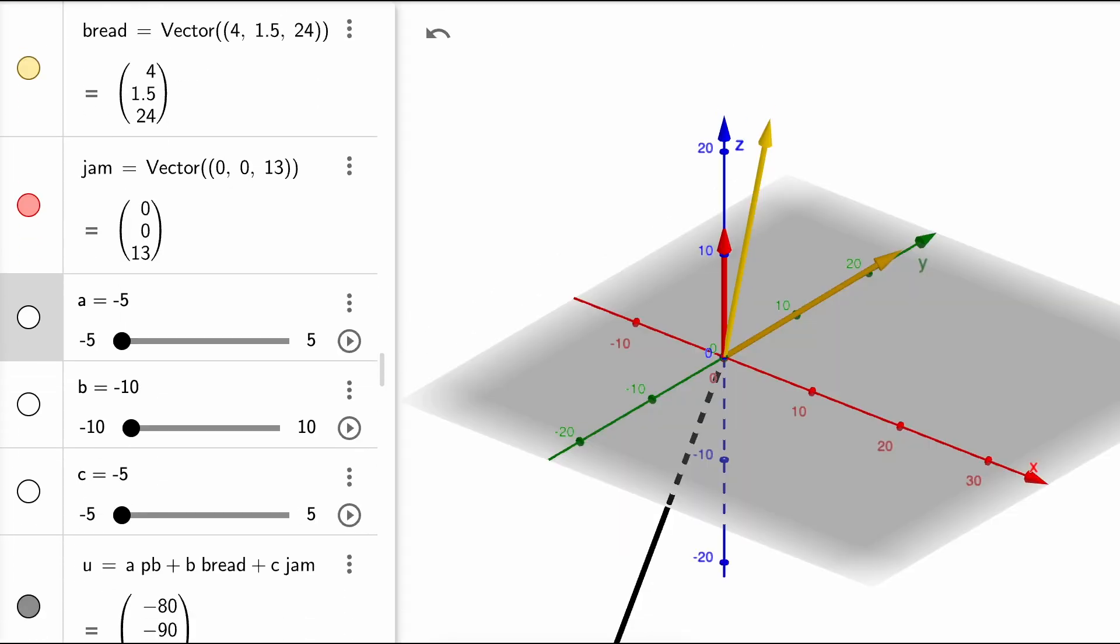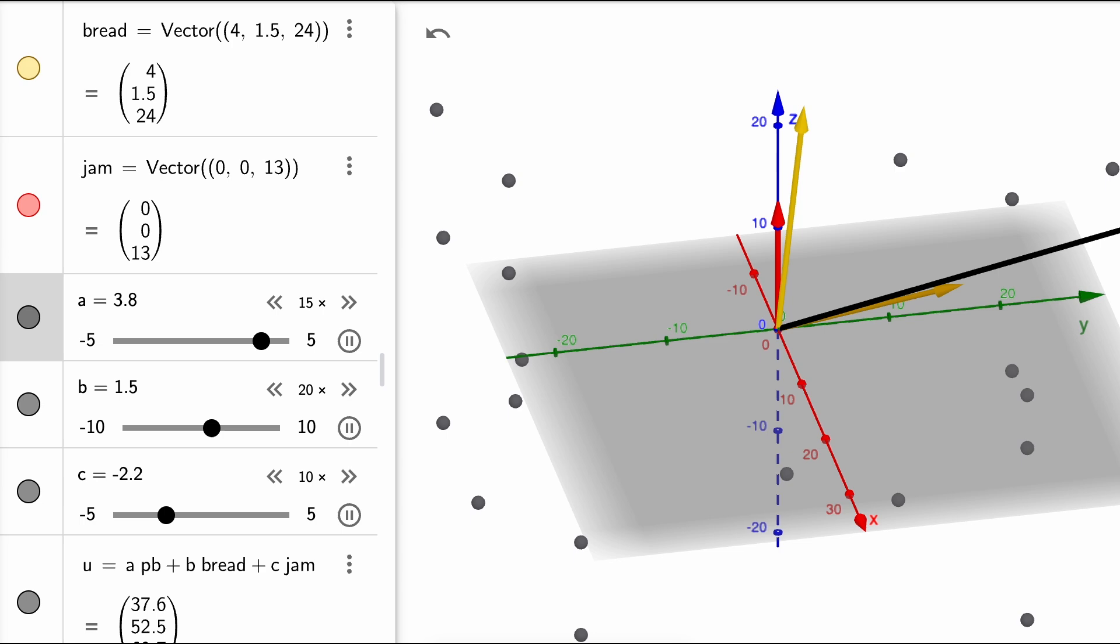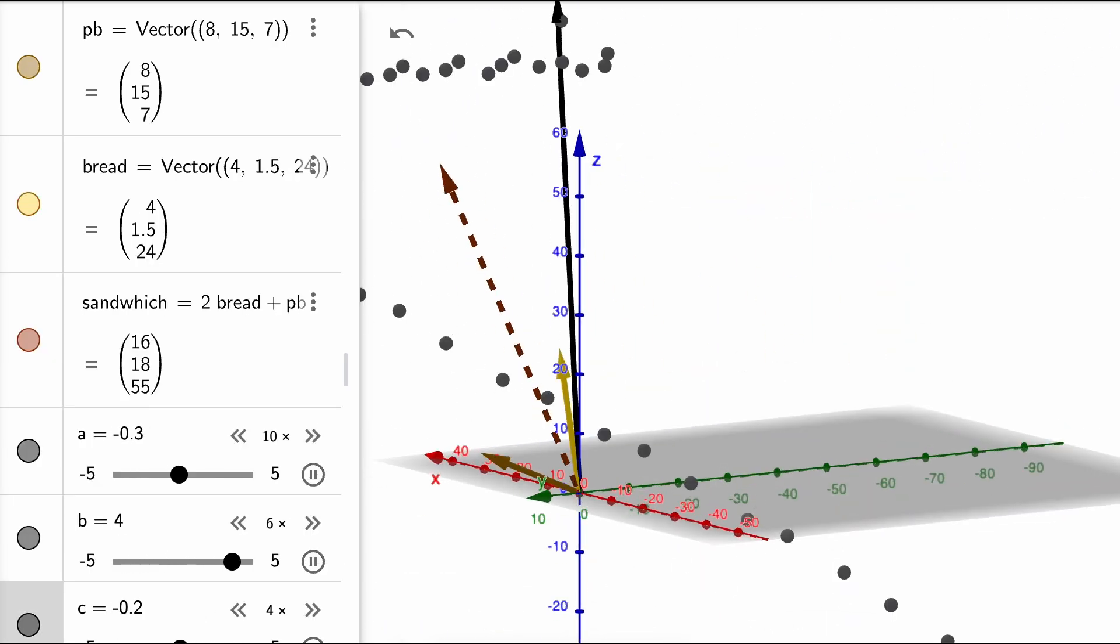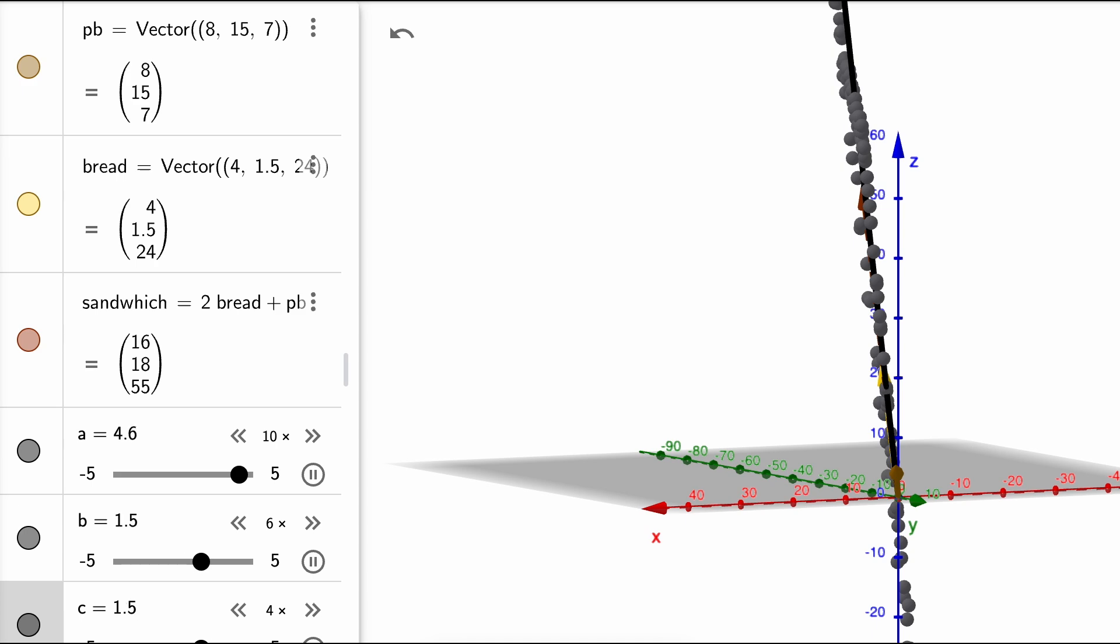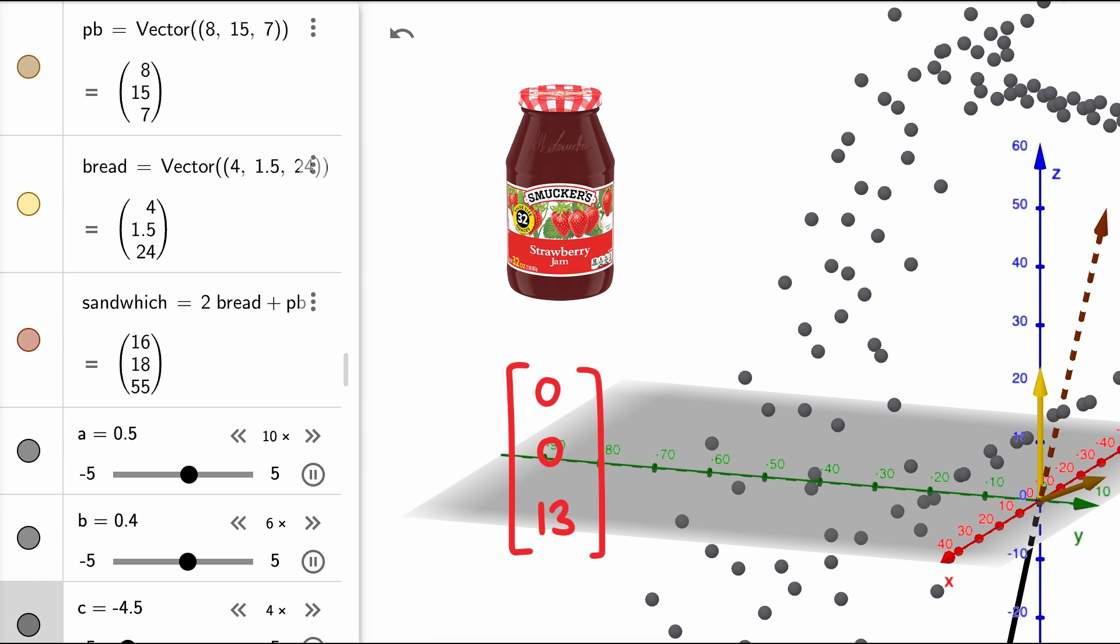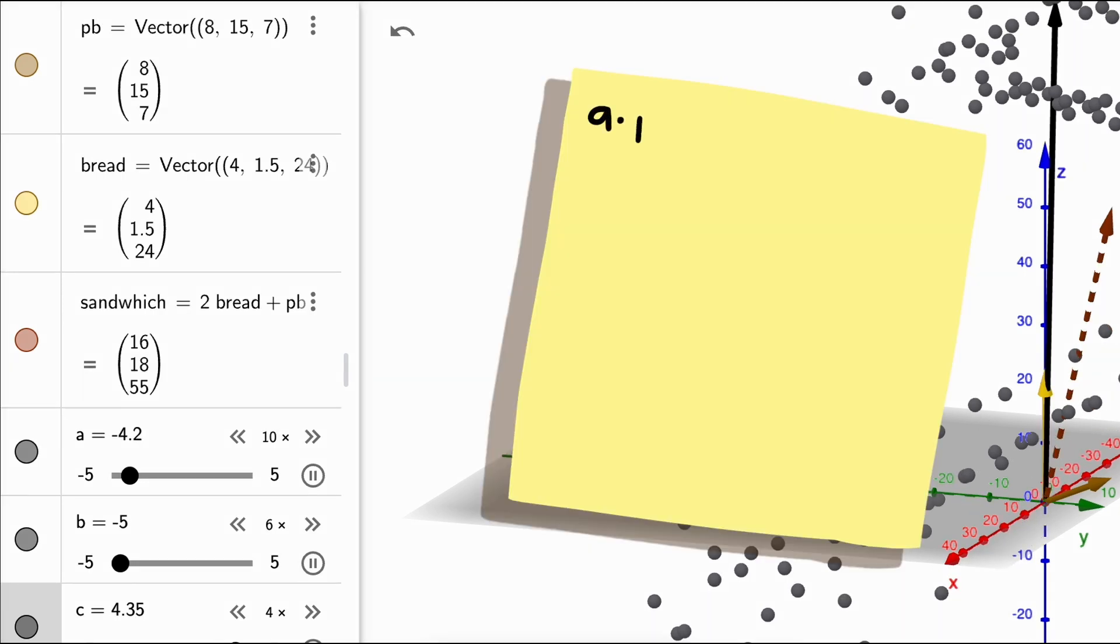Well, let's go back and look at the span of these sets of basis vectors. Running through a bunch of scalars for peanut butter, bread, and jam vectors points to being able to fill the protein, fat, and carb space. But running through a bunch of scalars for the peanut butter, bread, and sandwich vectors still seems to only span a plane, not a three-dimensional space. Why would adding the jam vector be different than adding the sandwich vector?